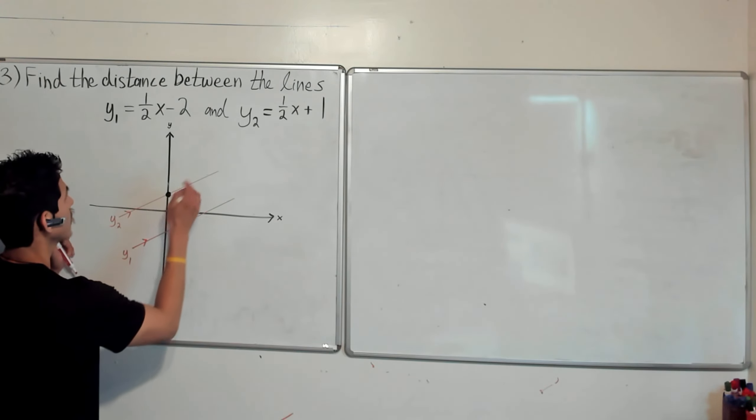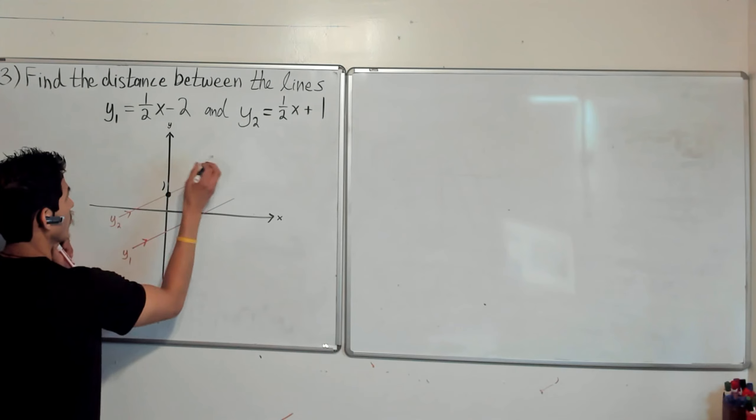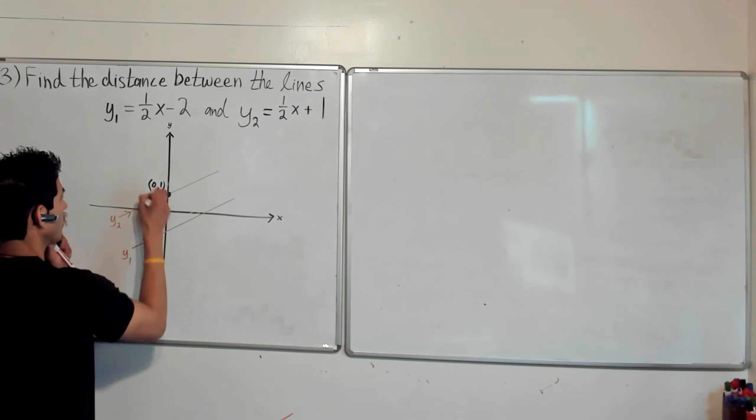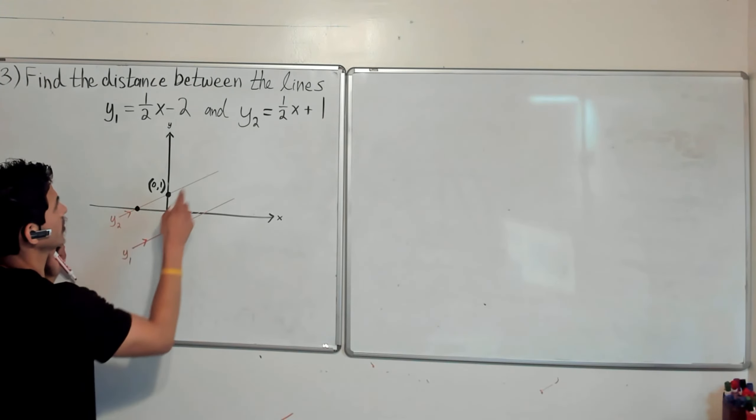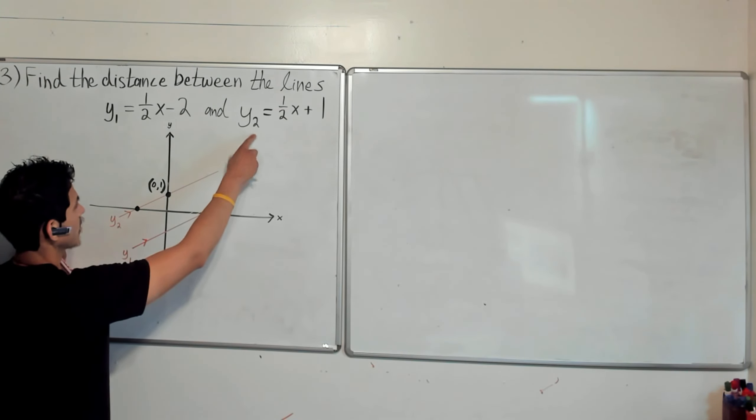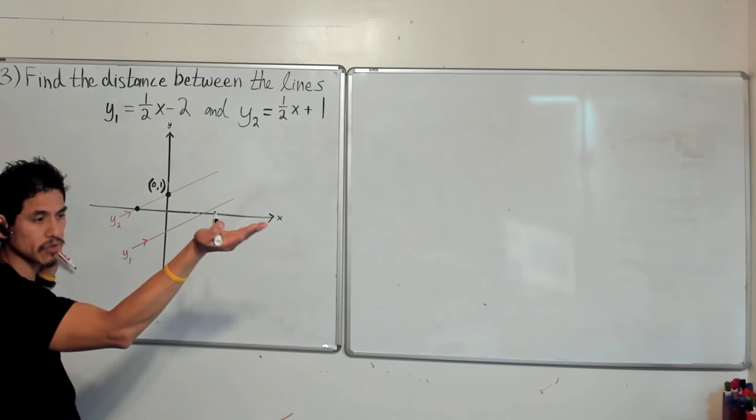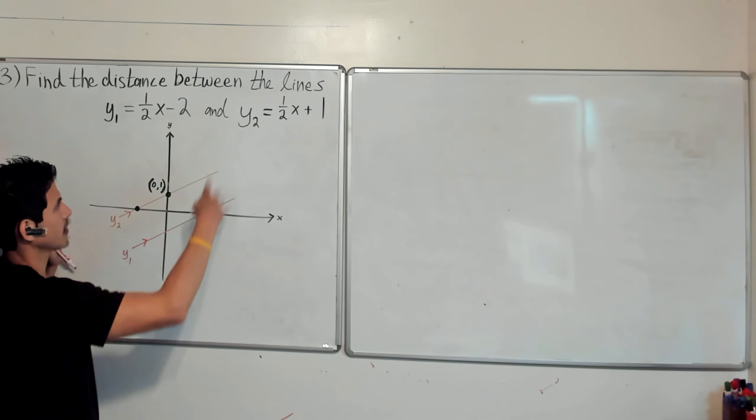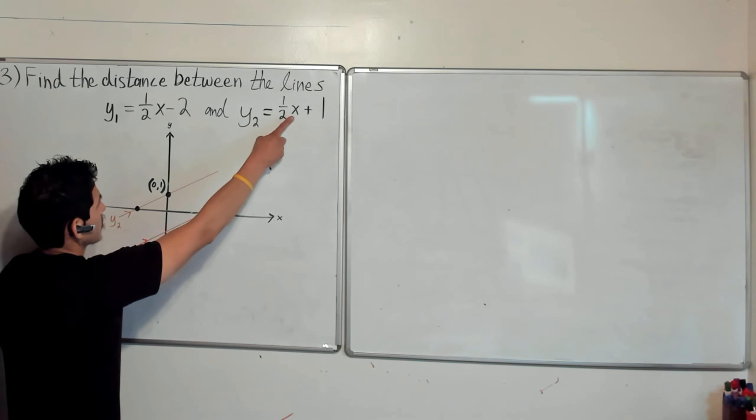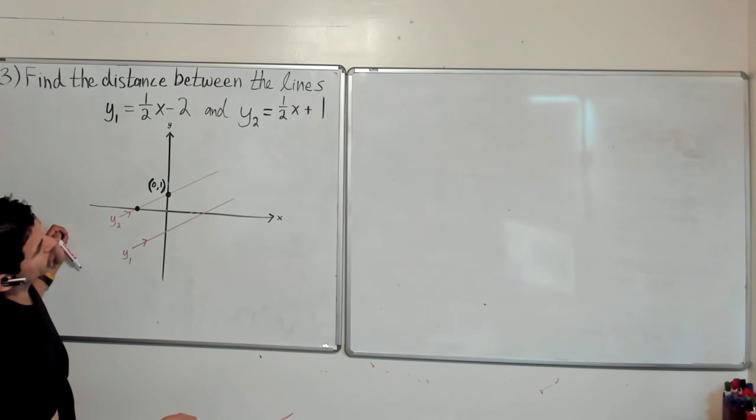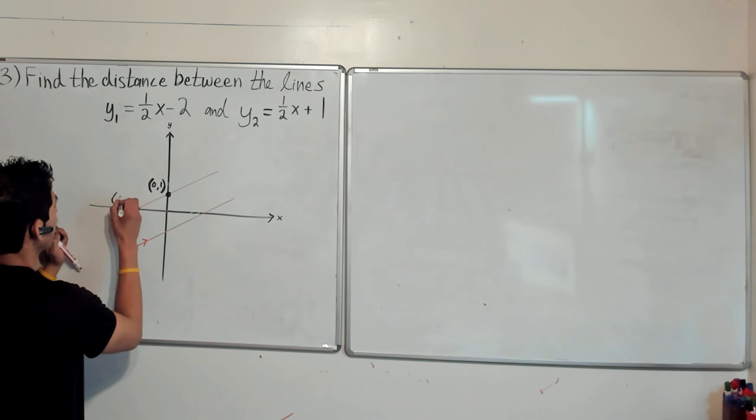So y2 has a y-intercept of 1. So we're going to have (0,1) over here. And then this point over here will be when y is zero. And again, these aren't necessary, but I'll show you why these could be useful, especially when I'm explaining this whole concept. So again, we can solve for y, but I'm just going to do it in my head. Plug in zero for y, and then we'll just get that x. So x will be negative 2. So then this will be (-2,0).